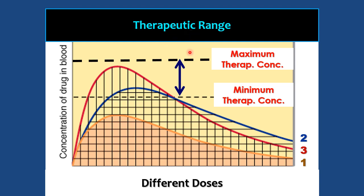To summarize dosage concepts: with a small dose, the minimum therapeutic concentration cannot be achieved; with a slight increase, therapeutic levels are reached but only briefly; with further increase, therapeutic levels are maintained for a longer period. Accordingly, the dosage of particular drugs is calculated.